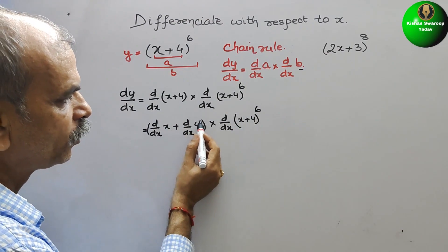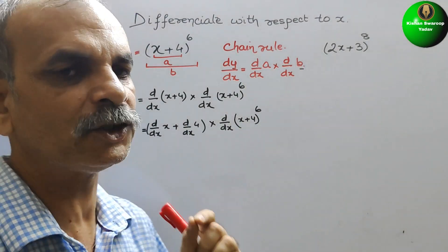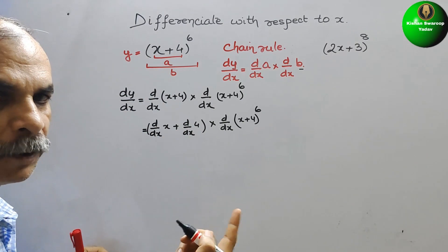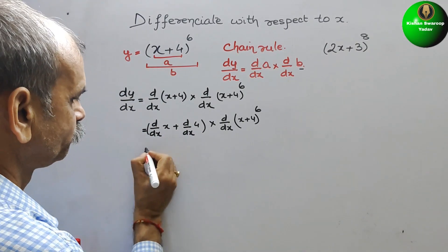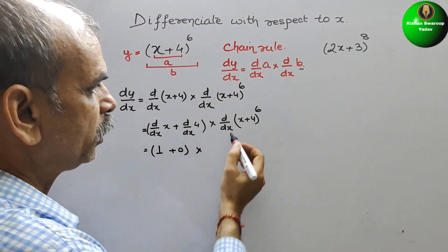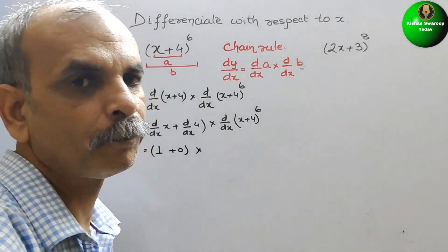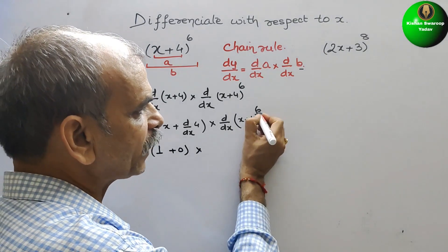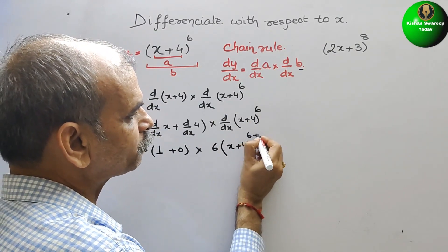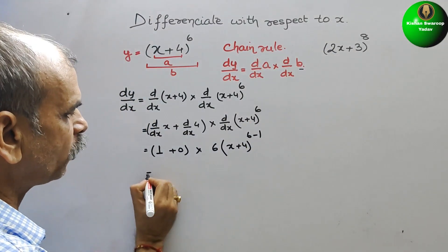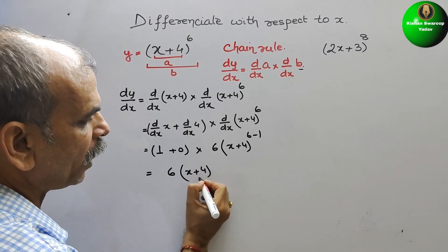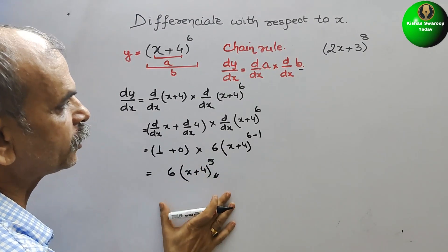So first differentiate this part. If you differentiate any constant you will get 0, and here we apply the power function — we get x to the power of 0, which is 1. So this gives 1 plus 0. Now differentiate the power function: n is 6, so we get 6 into x plus 4 to the power of 6 minus 1. Therefore the answer is 6 into x plus 4 to the power of 5.